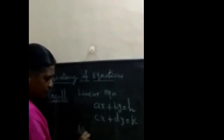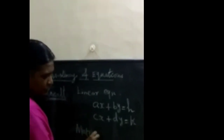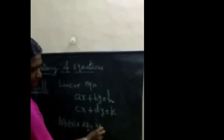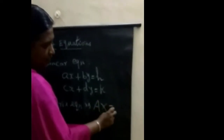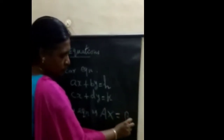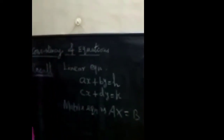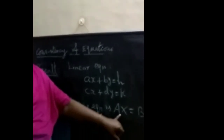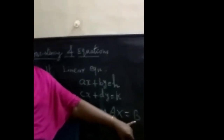This equation we want to convert into the form of a matrix — that is, the matrix equation. The matrix equation is known as AX equal to B, where A is the coefficient matrix, X is the variable matrix, and B is the solution matrix.